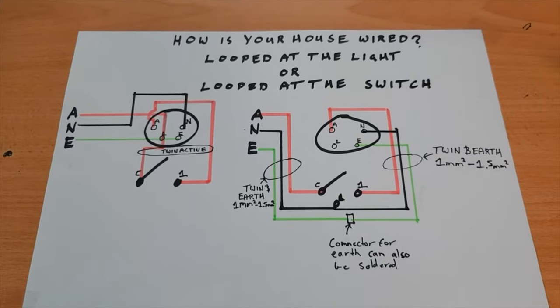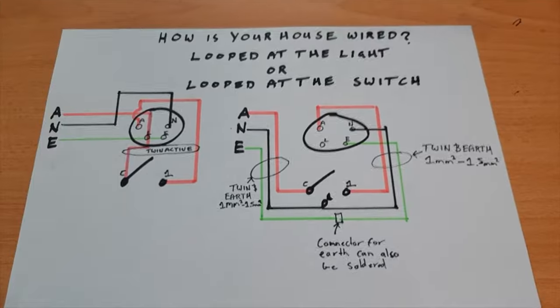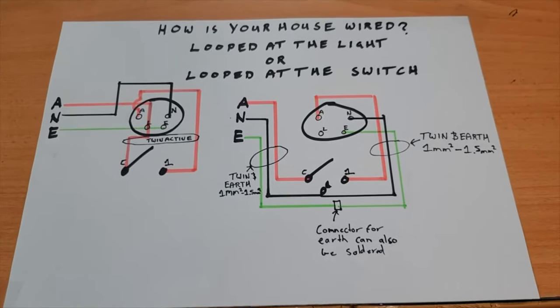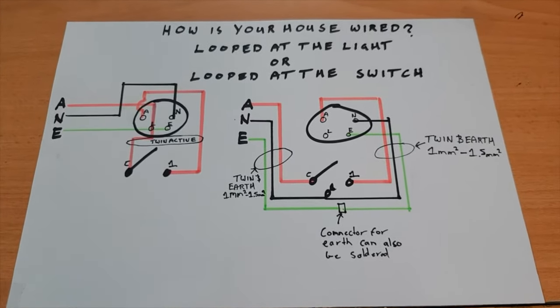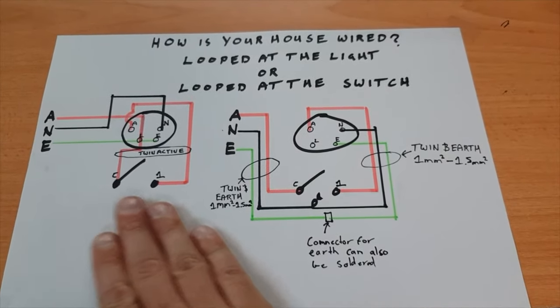Hey guys, all electrical here. Just a quick video explaining the difference between looped at the light and looped at the switch and how your house may be wired. The example on the left is looped at the light, and the example on the right is looped at the switch.